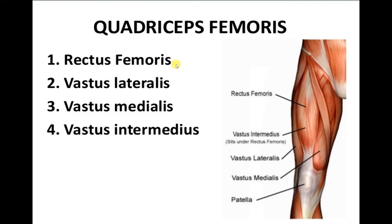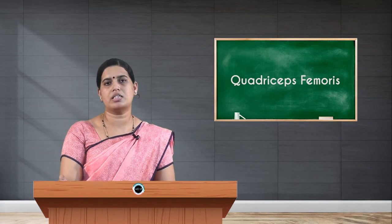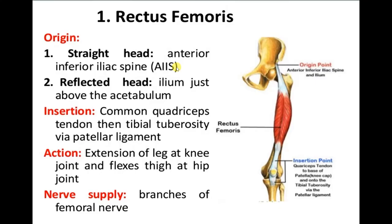The three vasti muscles are vastus lateralis, vastus medialis, and vastus intermedius. Out of these, only rectus femoris has its origin from the hip bone, whereas the rest of the vasti muscles have their origin from the shaft of the femur. Rectus femoris has two origins — two heads: the straight head and the reflected head. The straight head takes its origin from the anterior inferior iliac spine of the hip bone.